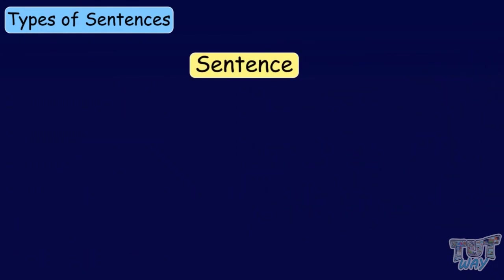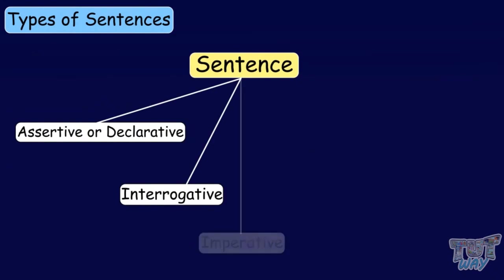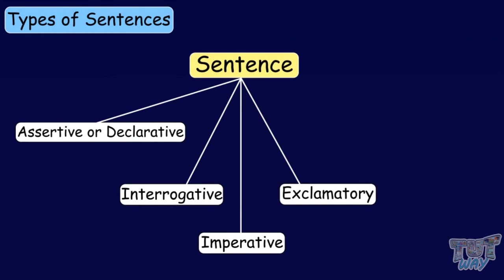Sentences can be categorized into different types. A sentence can be either an assertive or declarative sentence, an interrogative sentence, an imperative sentence, an exclamatory sentence, or an optative sentence. We will be learning about each of these types one by one.